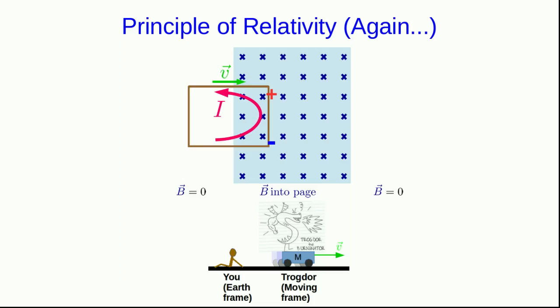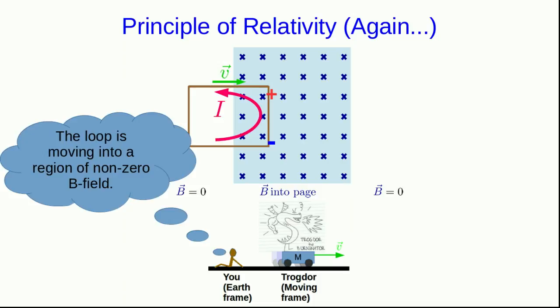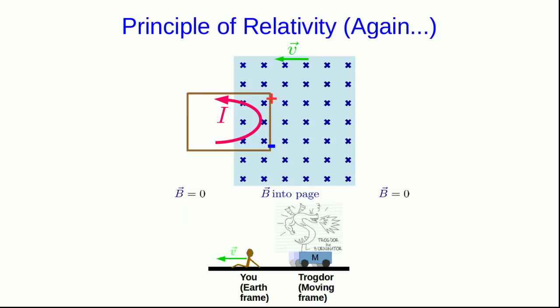Well, we have an effect here which is connected to the velocity of the loop. And as with all such situations, it can be important to think about how it appears from different reference frames. So let's look at U in the Earth frame and Trogdor moving along with the same velocity as the loop. So from your perspective, the loop is moving, and it's moving from a region of zero B field into a region of non-zero B field.